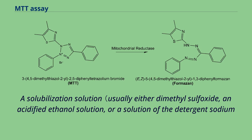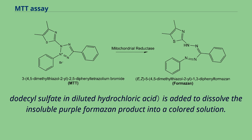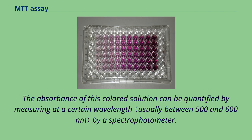A solubilization solution — usually either dimethyl sulfoxide, an acidified ethanol solution, or a solution of the detergent sodium dodecyl sulfate and diluted hydrochloric acid — is added to dissolve the insoluble purple formazan product into a colored solution.